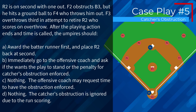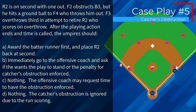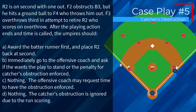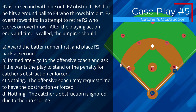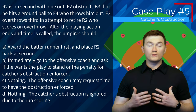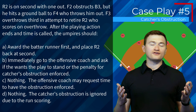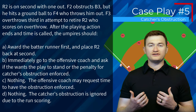Case play number five. R2 is on second with one out. F2 obstructs B3, but he hits a ground ball to F4 who throws him out. F3 overthrows third in an attempt to retire R2, who scores on the overthrow. After playing action ends and time is called, the umpire should A, award the batter runner first and place R2 back at second; B, immediately go to the offensive coach and ask if he wants the play to stand or the penalty enforced; C, nothing — the offensive coach may request time to have obstruction enforced; or D, nothing — catcher's obstruction is ignored due to the run scoring. The correct answer is A — we must first enforce the penalty for obstruction because all requirements to ignore it were not met. After enforcing it, the offensive coach has the ability to request that we instead take the results of the play.